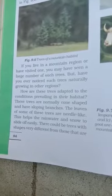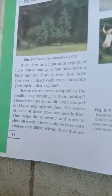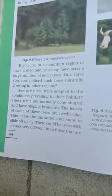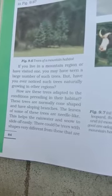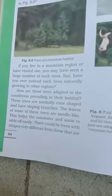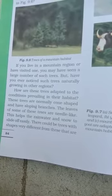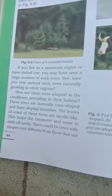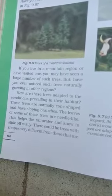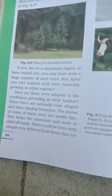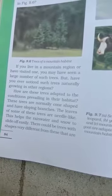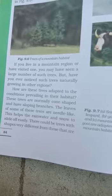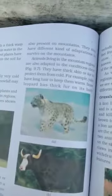How do trees adapt to conditions in their mountain habitat? Trees there are normally cone-shaped and have sloping branches — this is a very important feature. The leaves of some of these trees are needle-like. This helps rain water and snow to slide off easily. So the needle-like leaf structure on mountain plants helps rain water and snow slide off, and there could also be trees with shapes very different from these also present on mountains.